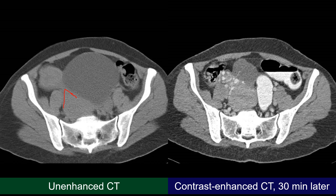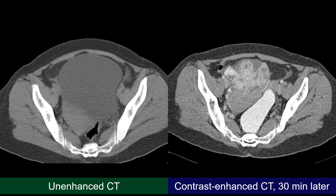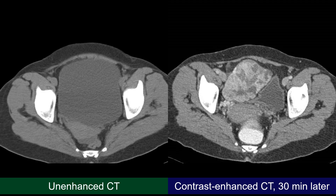On the contrast-enhanced image, we see a bunch of vessels at the location of the right horn of the uterus. Now we see the solid lesion we were missing on the contrast-enhanced CT. It is located in front of the uterus, strongly enhancing and displacing the urinary bladder, which had been emptied by the patient in the interval between the two examinations.